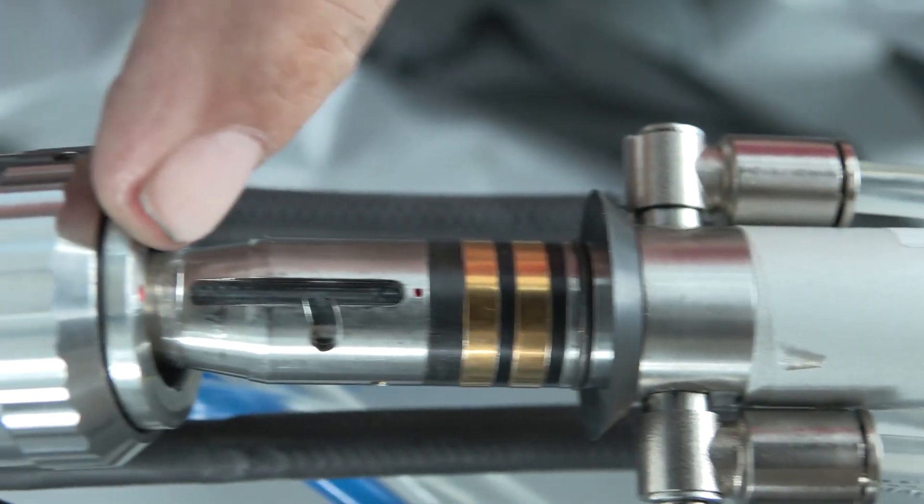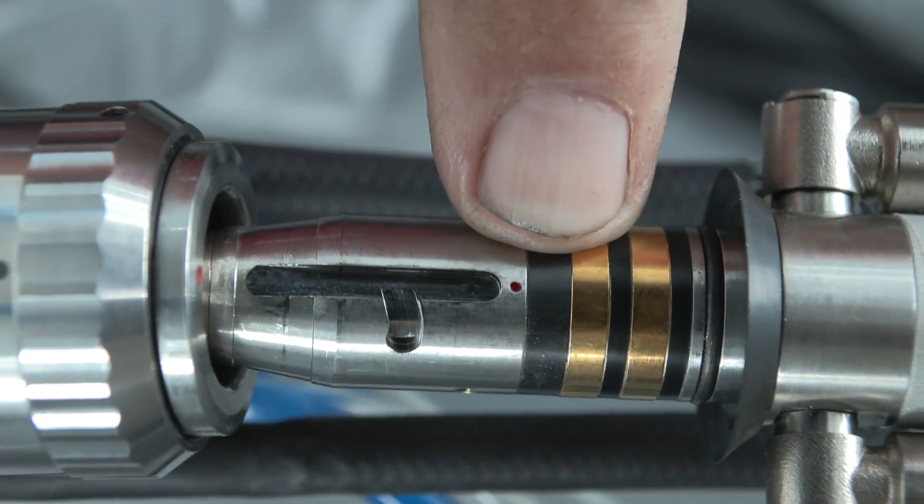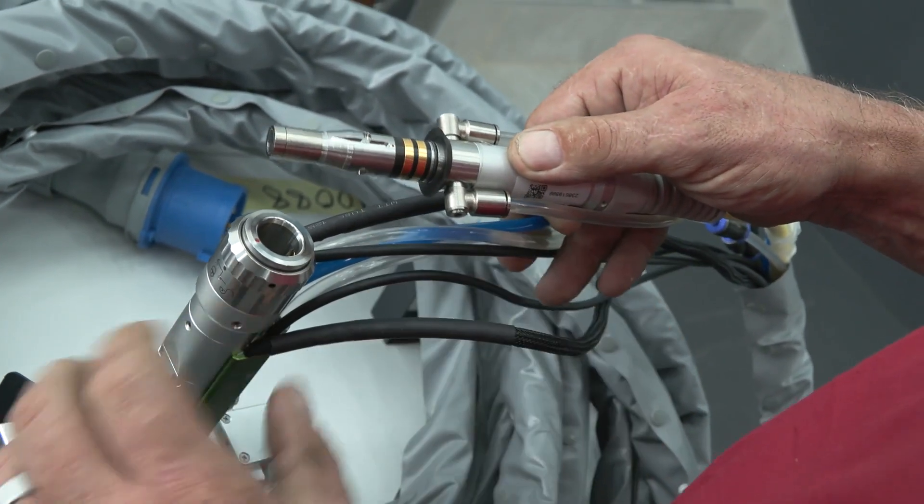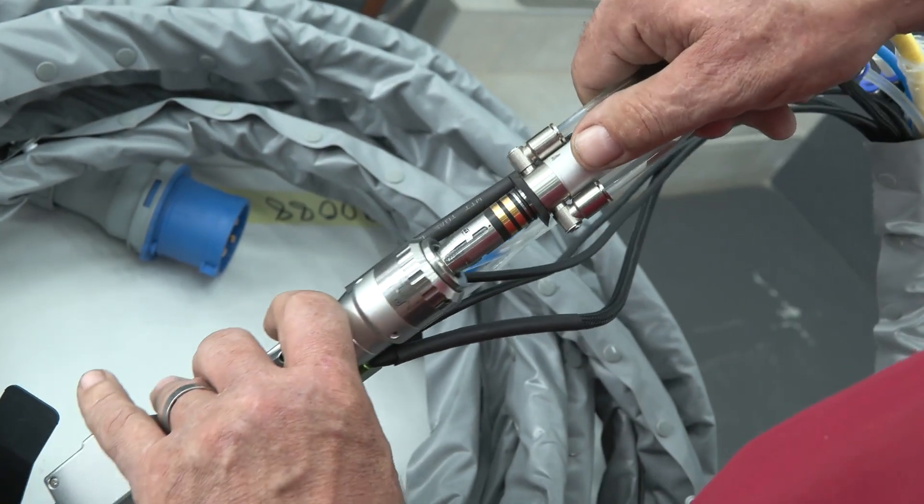So the way to correctly insert the laser into the gun is as follows: Align the red dot on the gun with the red dot on the laser. Push the laser into the gun.